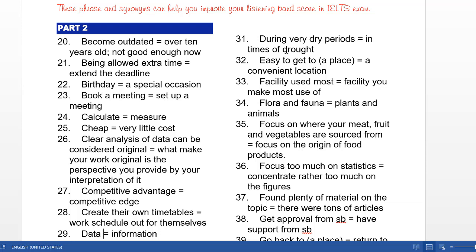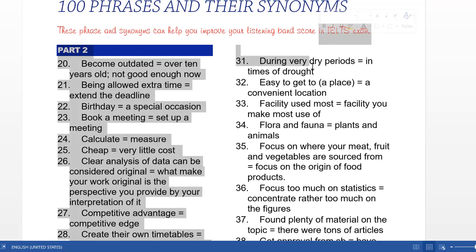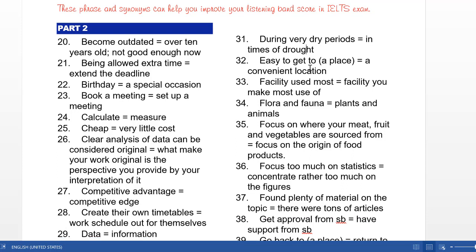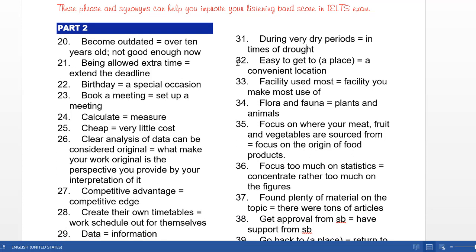Easy to get to a place and a convenient location. When you live in a place that's easy to get to different areas, we can call this a convenient location. Location and place have the same meaning. Easy to get, easy to find, we call convenient, or you can say it's handy place or handy location. Handy, easy to reach, easy to get to different places.